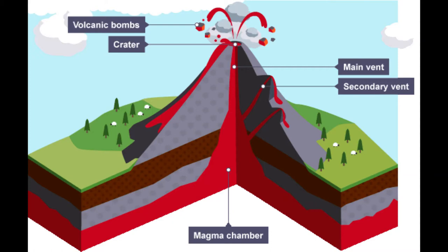Starting at the bottom, we have the magma chamber. This is where the molten rock is stored beneath the ground at great heat and pressure. When this pressure builds up, the main vent is where the magma travels through to reach the Earth's surface. Sometimes the main vent can get blocked and we have a secondary vent, and magma may escape through the side of a volcano.